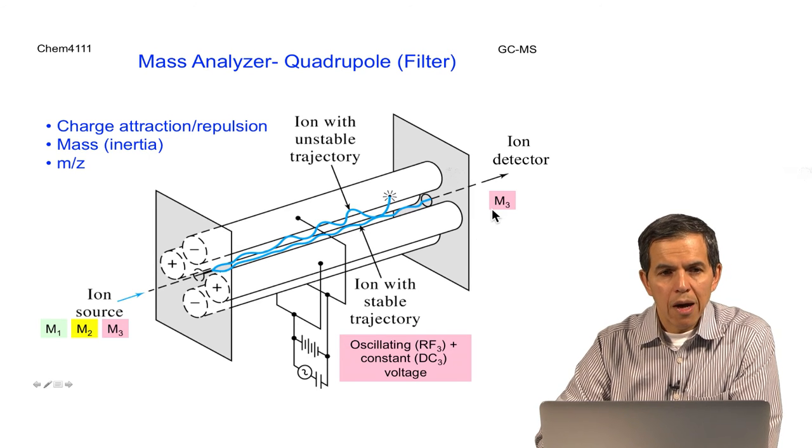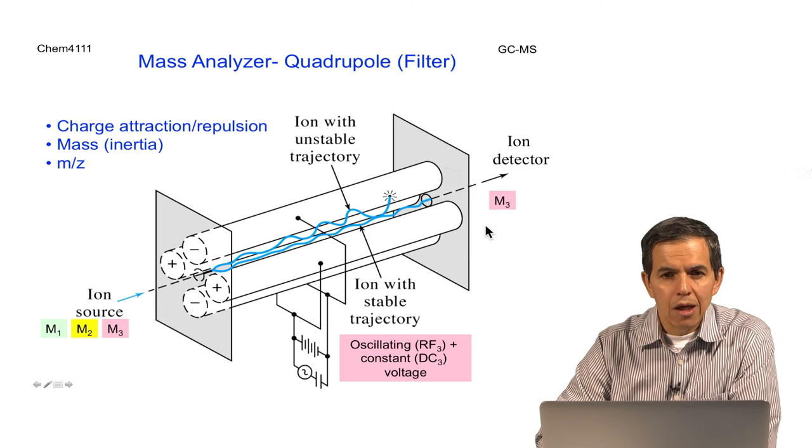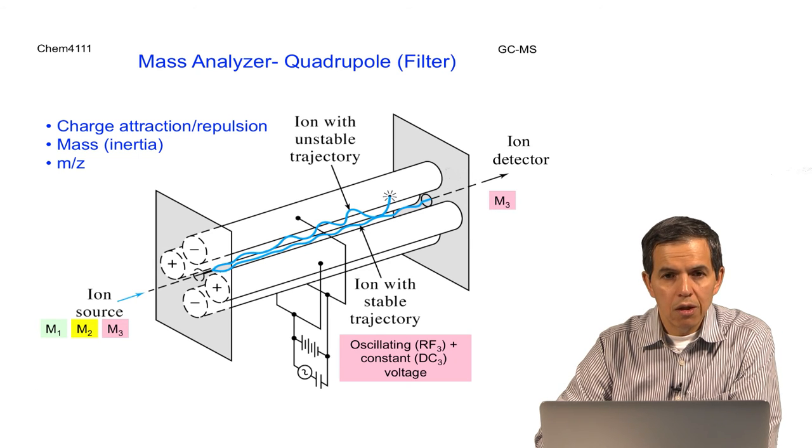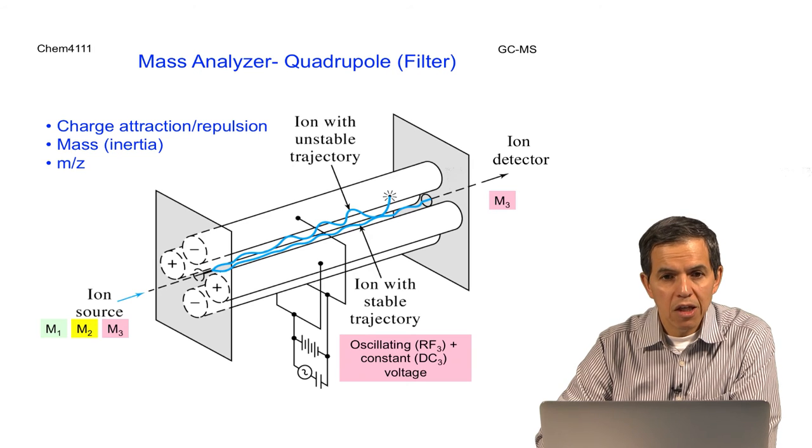By selecting the correct combination of the oscillating and constant voltage, we can transmit a selective ion towards the ion detector. If we do this as a function of time, we can get a mass spectrum range that corresponds to the output of the mass spectrum.